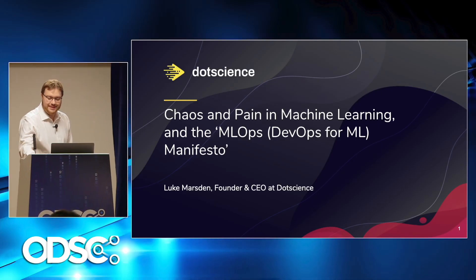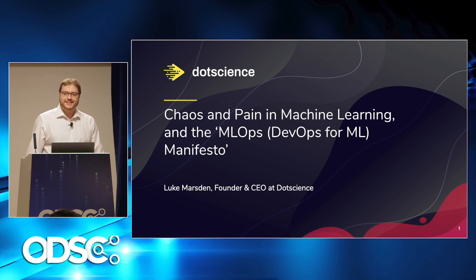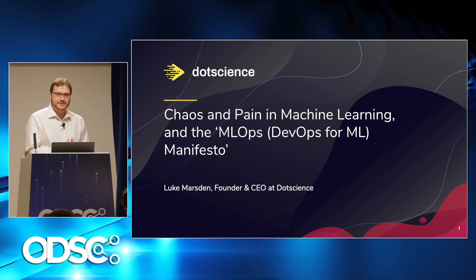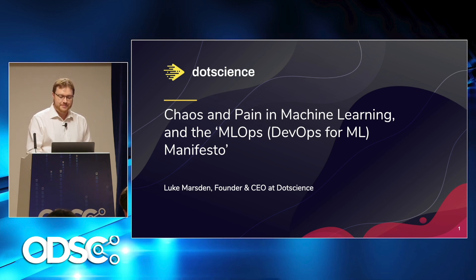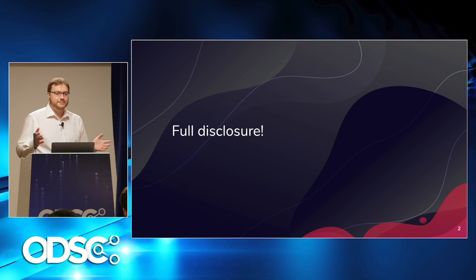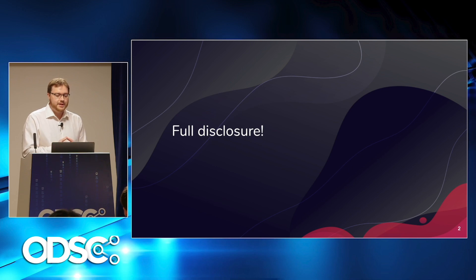Hi folks. Thanks for having me at ODSC. It's great to see everyone here. I'm going to talk about chaos and pain in machine learning and what we're calling the MLOps manifesto. What I mean by MLOps is DevOps for ML — I'll explain what I mean by that in a moment. I wanted to start with full disclosure: I'm the founder of a company that is building tools for data scientists, but I didn't want to make this talk an explicit product pitch, so I'm not going to shove .science down your throat here.